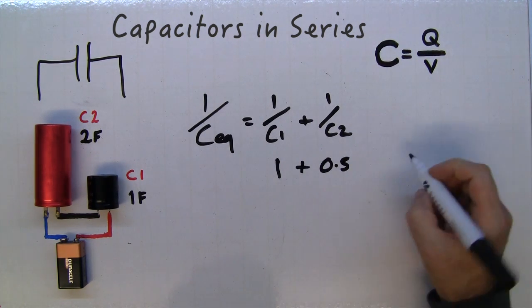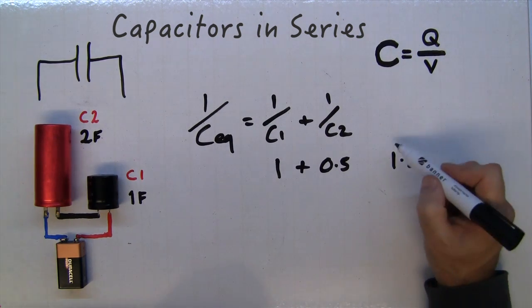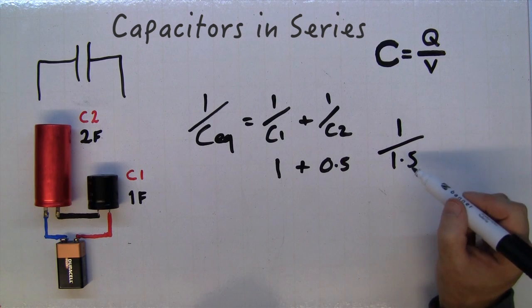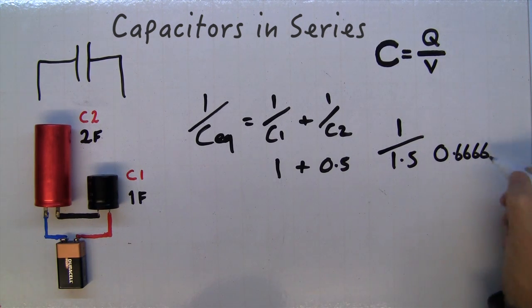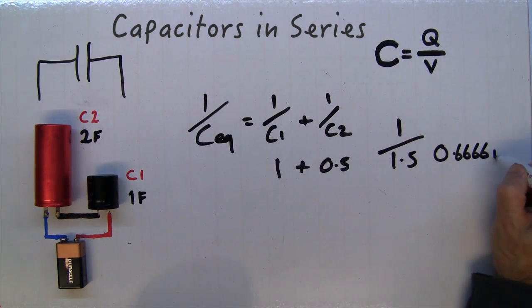One plus 0.5 is 1.5. That's not your answer yet. You've got to have one over 1.5, that's two thirds which is 0.6666 forever. So this is your farads.